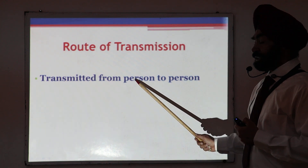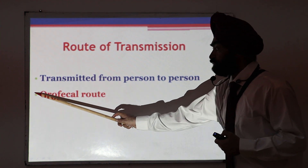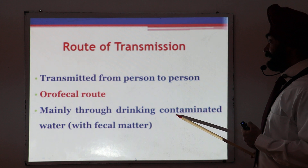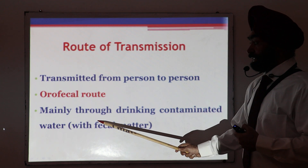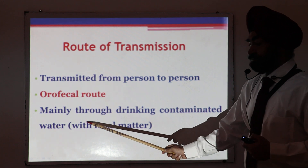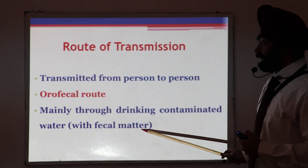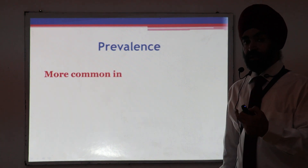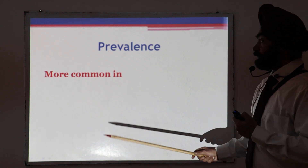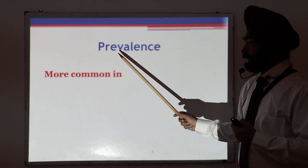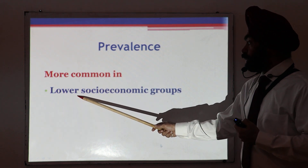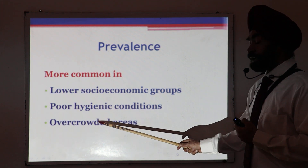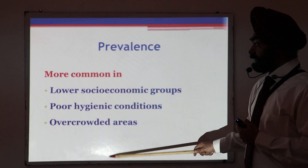The virus is transmitted from one person to another by the oral-fecal route — that means through drinking water contaminated with fecal matter. As the name indicates, this disease is more prevalent in lower socioeconomic groups, poor hygienic conditions, overcrowded areas — these are the areas where the disease actually prevails.